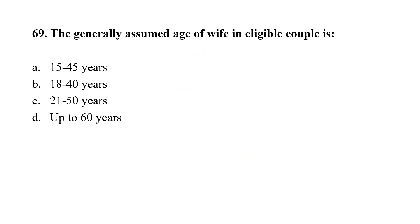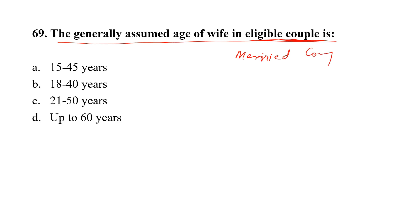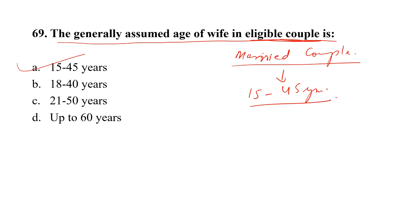Question number 69. The generally assumed age of wife in an eligible couple is: Option A, 15 to 45 years; Option B, 18 to 40 years; Option C, 21 to 50 years; Option D, up to 60 years. An eligible couple refers to a currently married couple wherein the wife is in reproductive age, generally between 15 to 45 years of age. The correct option is A.